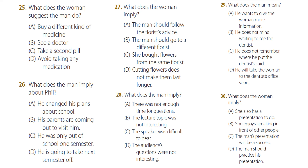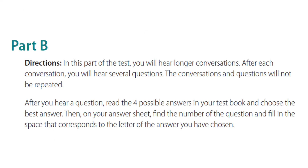This is the end of Part A. Now read along as the directions for Part B are being read. Part B. Directions: In this part of the test, you will hear longer conversations. After each conversation, you will hear several questions. The conversations and questions will not be repeated. After you hear a question, read the four possible answers in your test book and choose the best answer. Then, on your answer sheet, find the number of the question and fill in the space that corresponds to the letter of the answer you have chosen.